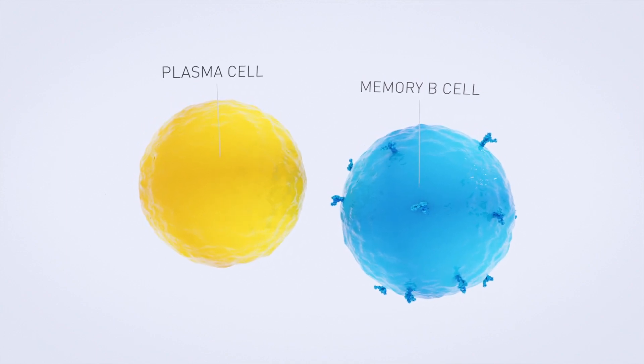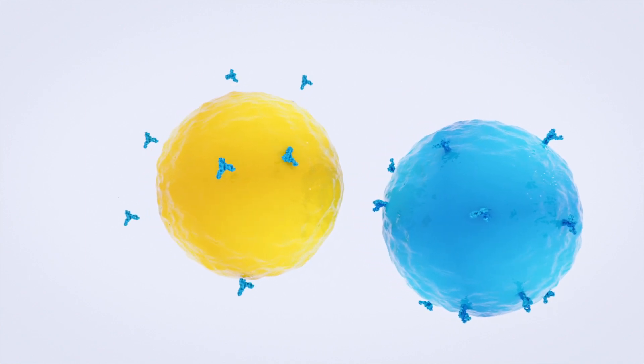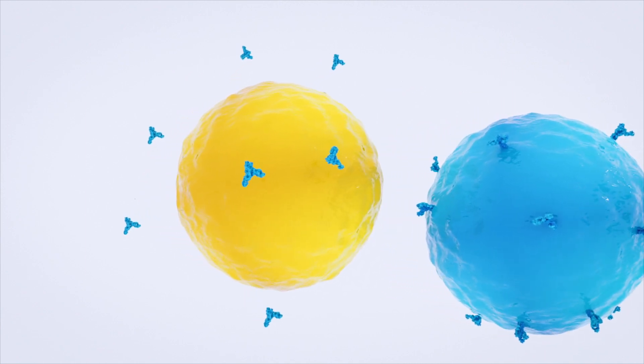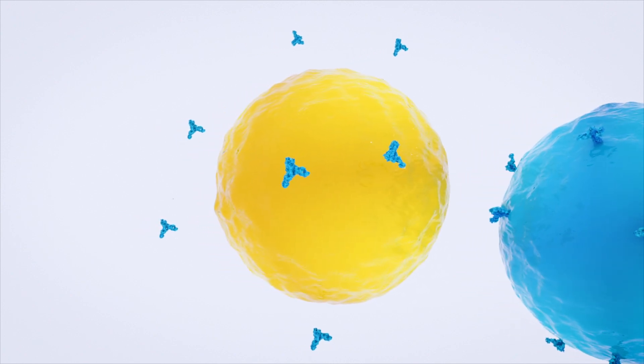The main function of plasma cells is to release antibodies. The antibodies created are specific to the antigen which was bound to the B cell in the first place.